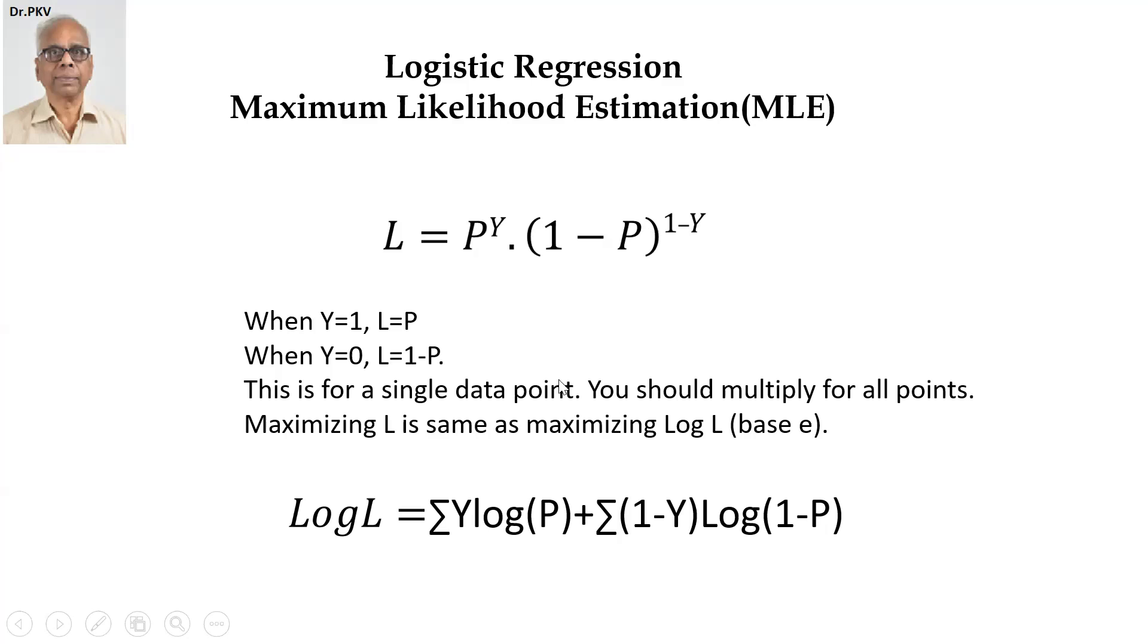This is for a single data point. And we represent the joint probability. The joint probability, if you have a data set, let's say of N observations, where N is the sample size, then we multiply the joint probability. I'm avoiding the subscripts for the sake of clarity and importance.